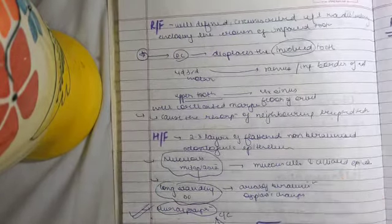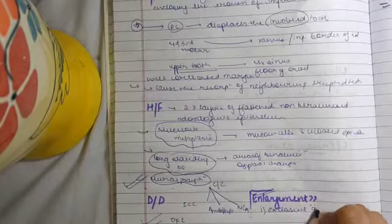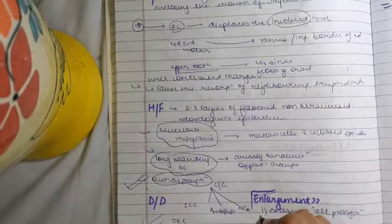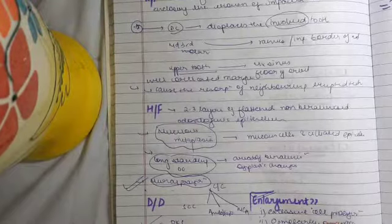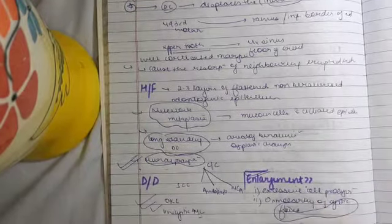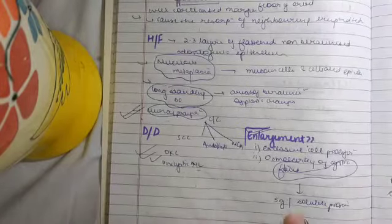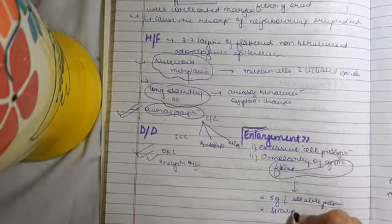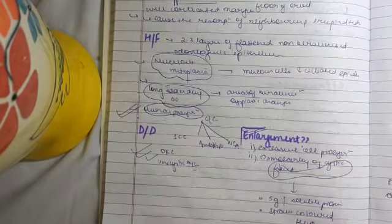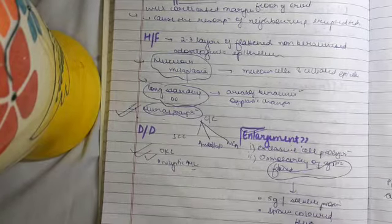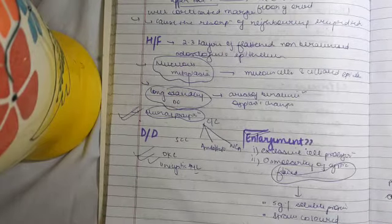Coming to the enlargement: enlargement can occur if there is excessive cell proliferation. It is occurring due to the fluid, so osmolarity of cystic fluid is important. In dentigerous cyst, you see 5 gram percent soluble protein. Remembering the color of the cystic fluid is very important - dentigerous cyst has a straw-colored fluid. It has many glucosaminoglycans as well, and it also has many mucopolysaccharides.